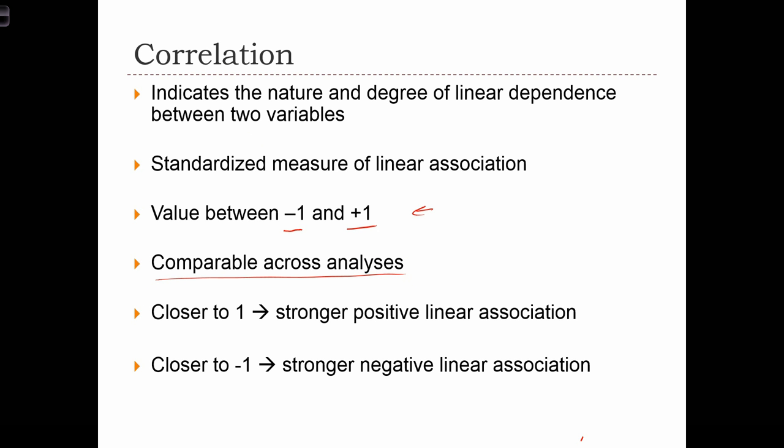We can compare the relationship between number of bedrooms and price, where the x variable number of bedrooms is measured in a count of how many rooms there are, and we can compare that to the size of a house and price, that relationship, where size is maybe measured in square feet. Two totally different variables, the way that they're measured, will cause two very different calculations of the covariance statistic.